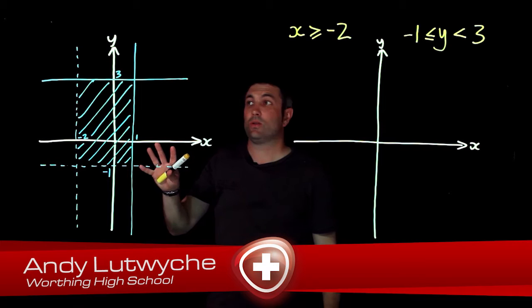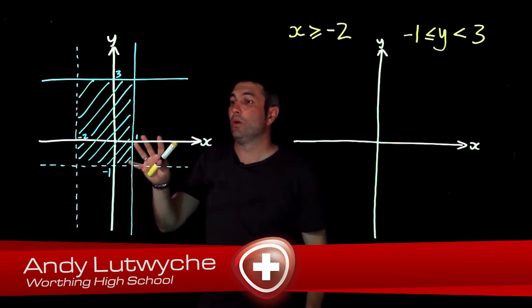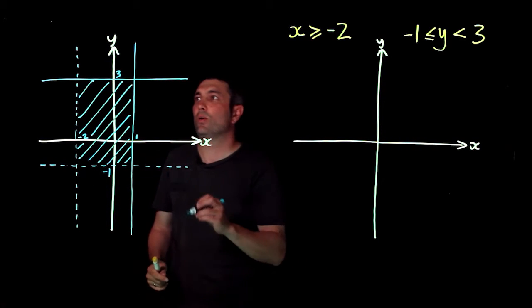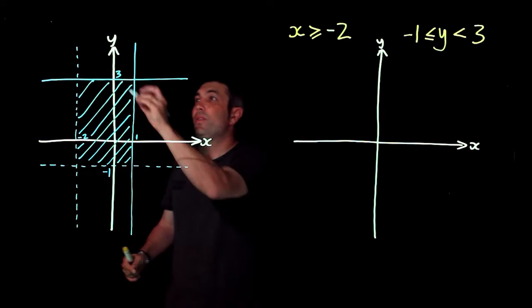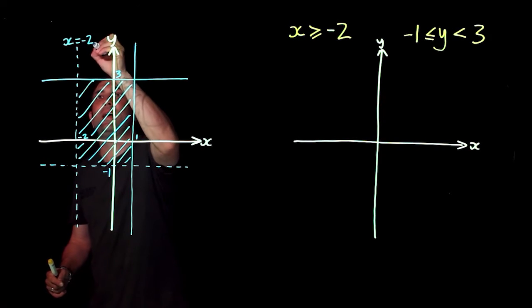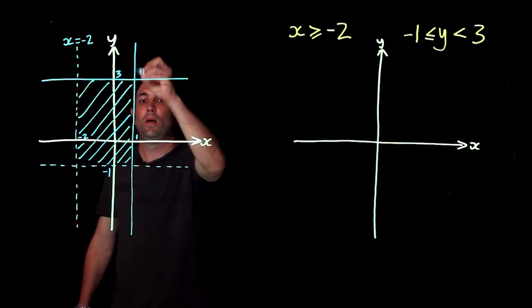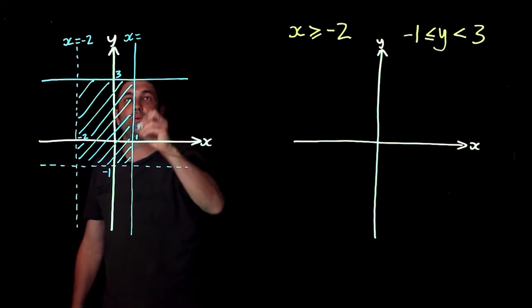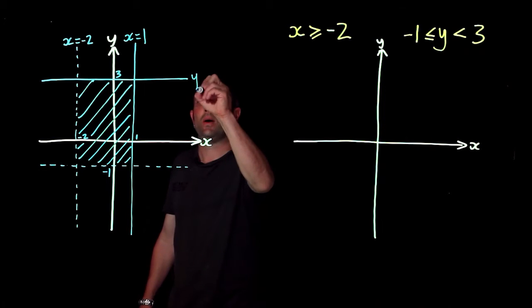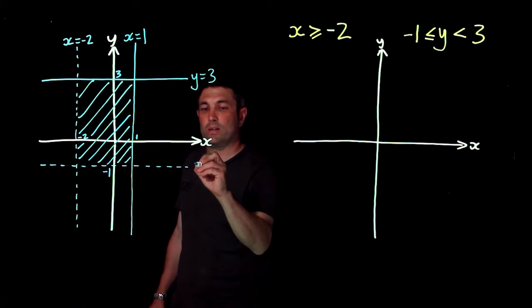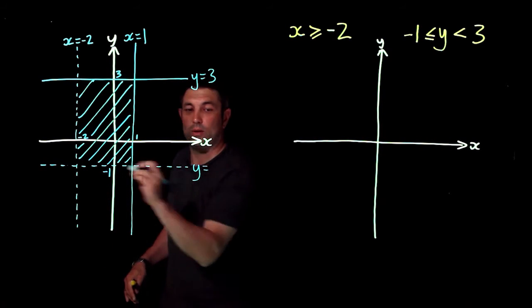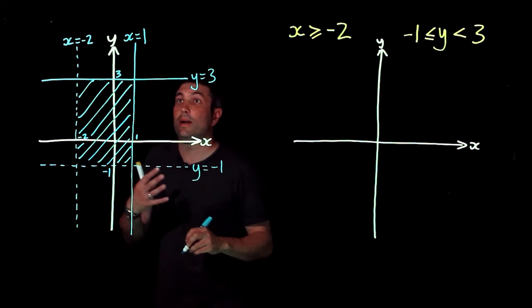We're looking at shading regions. First we need to work out what lines are enclosing the shaded region. Working around: there's a vertical line going through the x-axis at minus two, so that's x equals minus two. Another vertical line, x equals one. A horizontal line y equals three, going through three on the y-axis, and another horizontal line going through minus one.